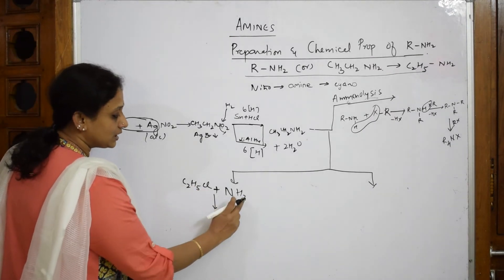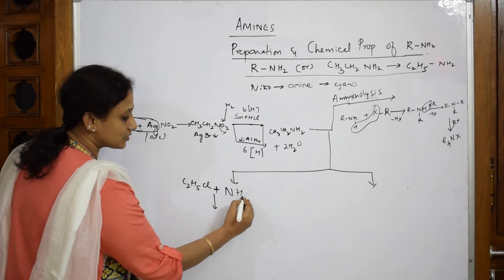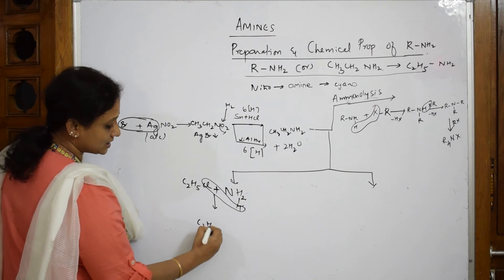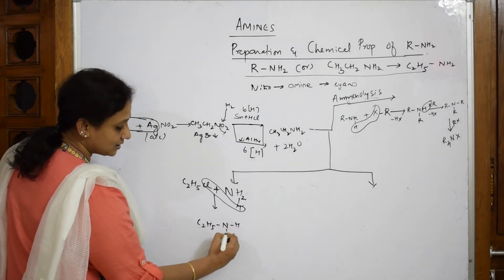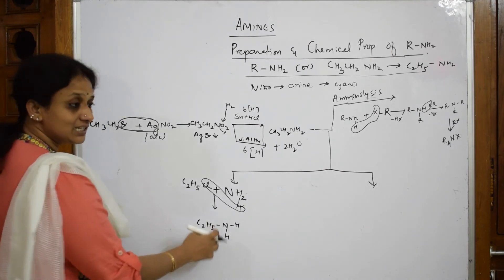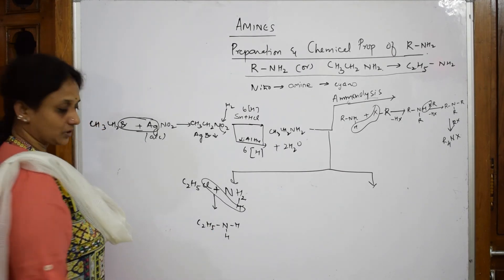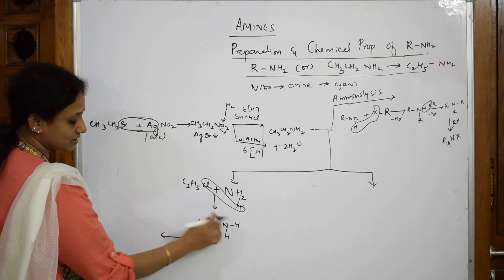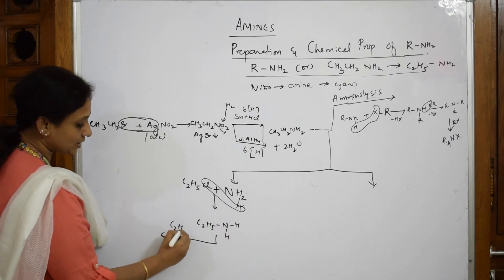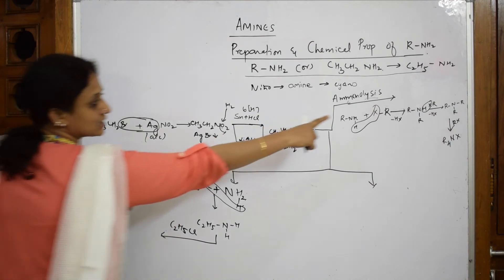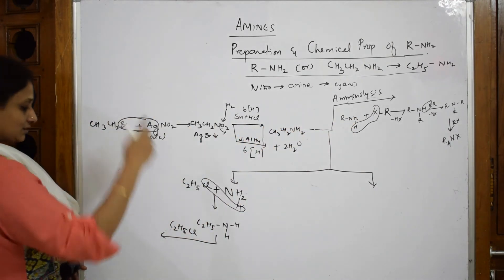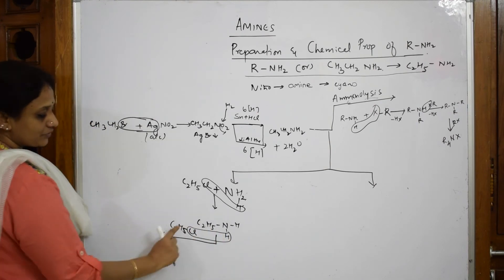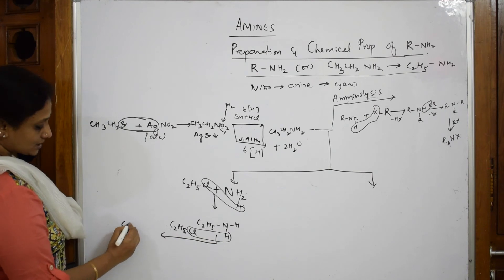When you're adding, there are three hydrogens in ammonia. One H and Cl comes out as HCl. What do I get? C2H5NH2 - ethylamine. Now to this I add one more C2H5Cl. Again HCl comes out, so I get C2H5-N-C2H5 with one H - diethylamine.